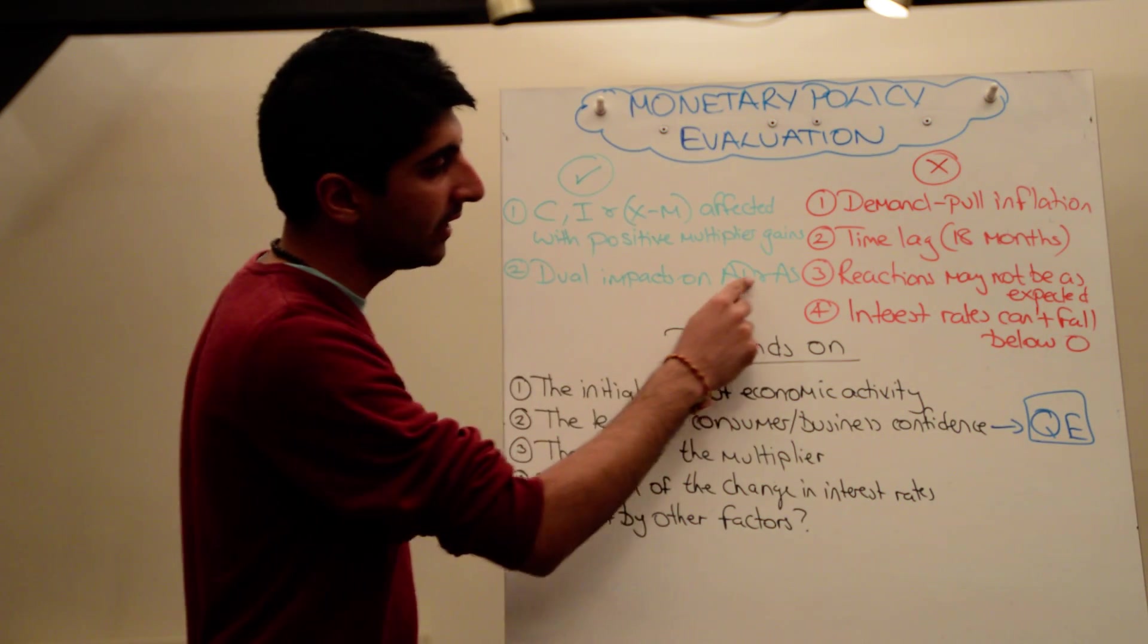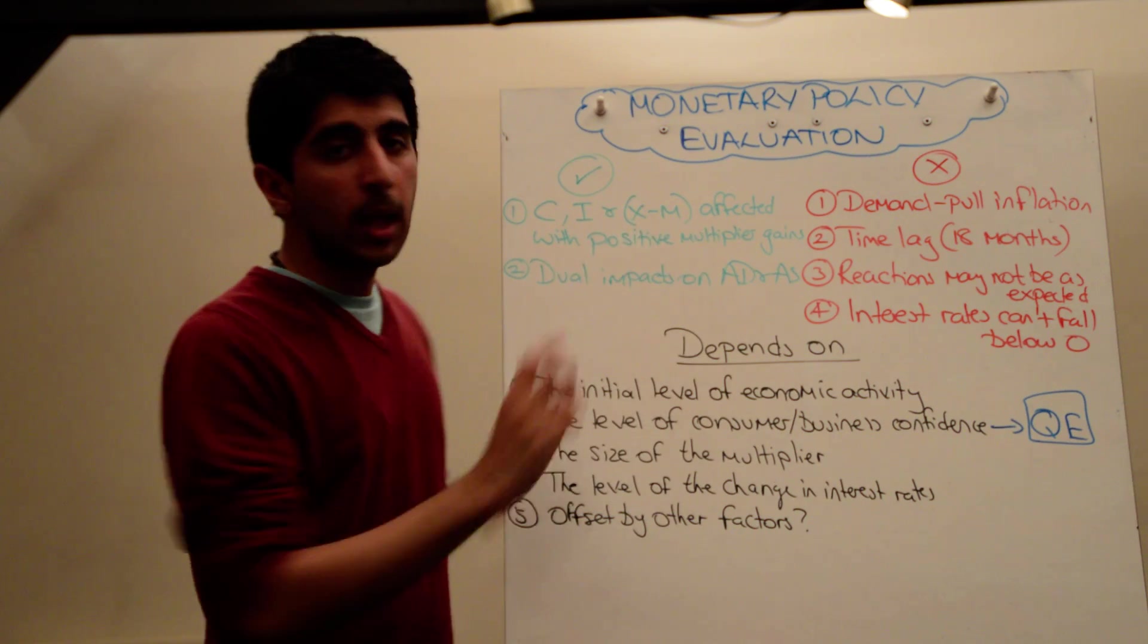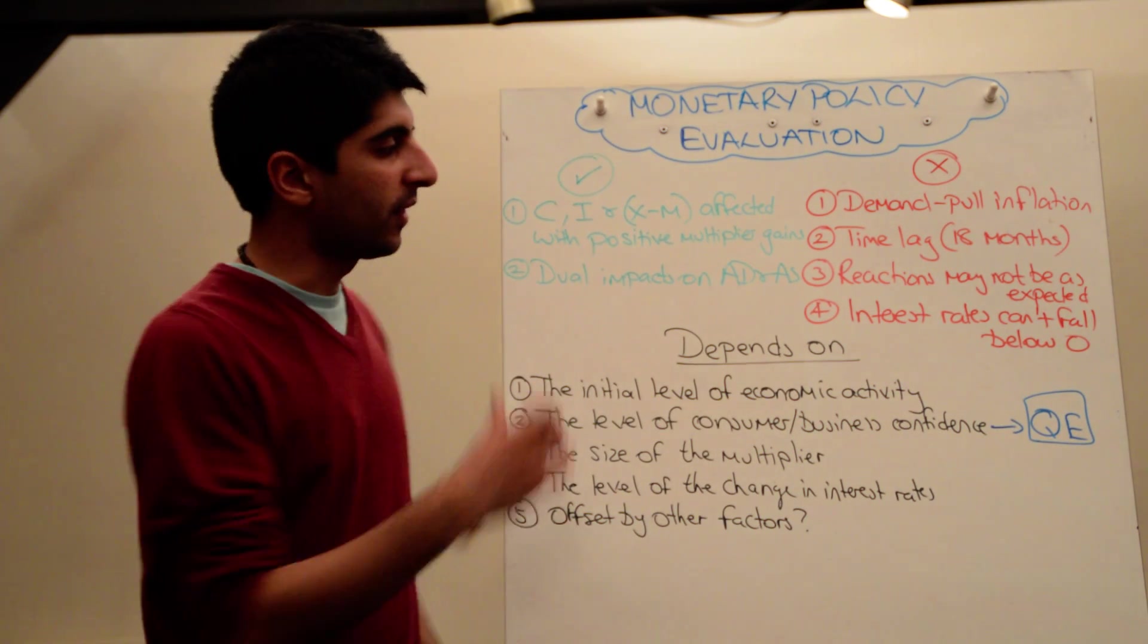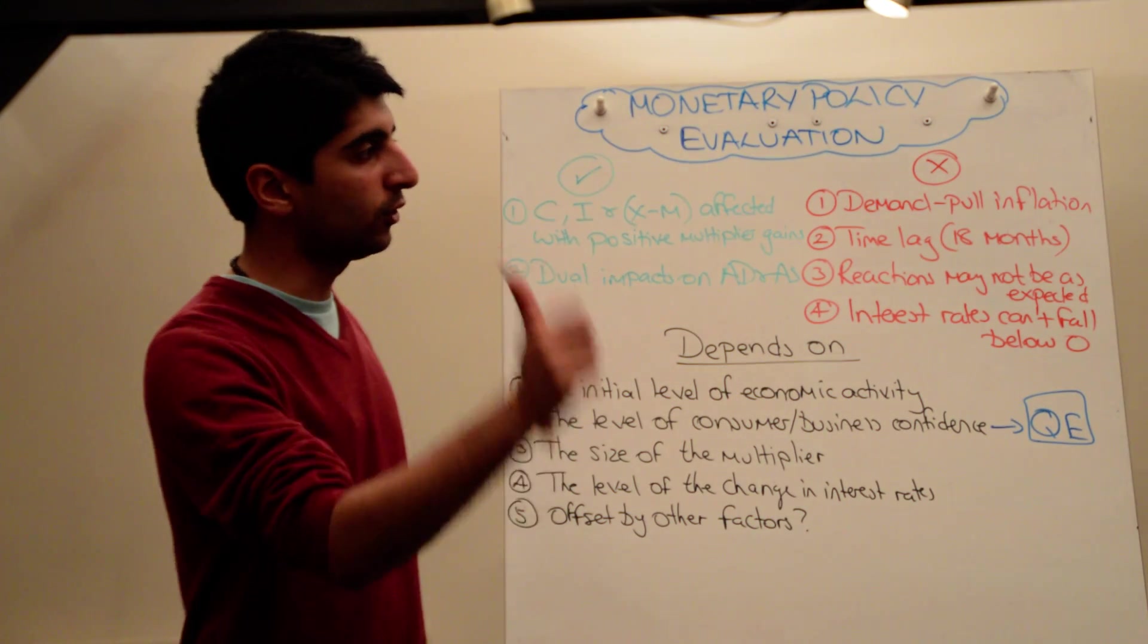There are dual impacts on AD and AS, as we said in the previous video. Yes, for aggregate demand from here, but also an increase in investment increases the quantity and quality of capital. So therefore, long run, aggregate supply increases, the productive capacity of the economy increases, which is good.